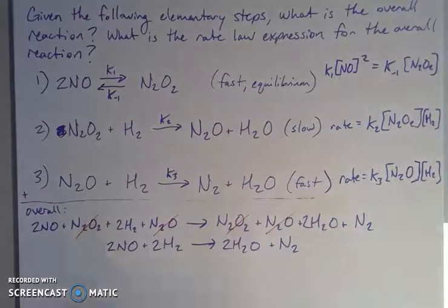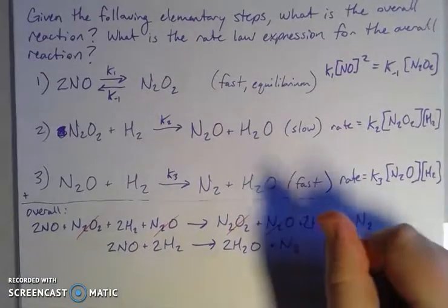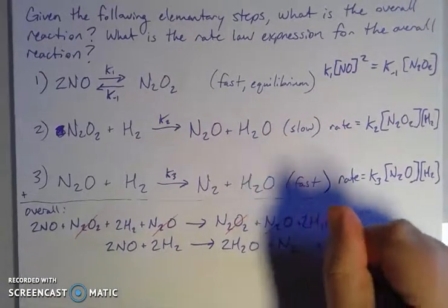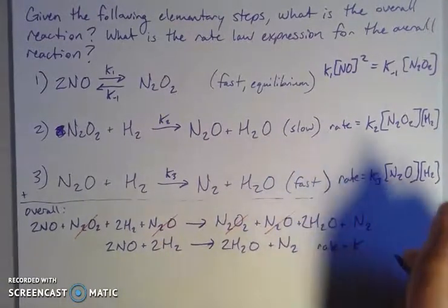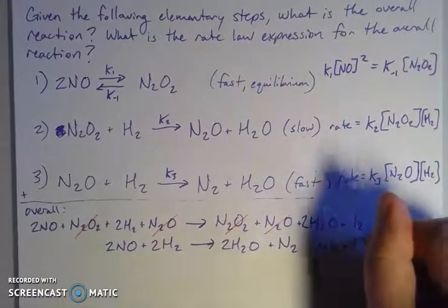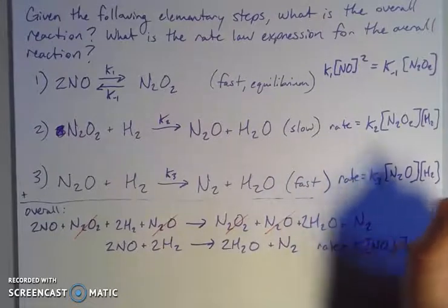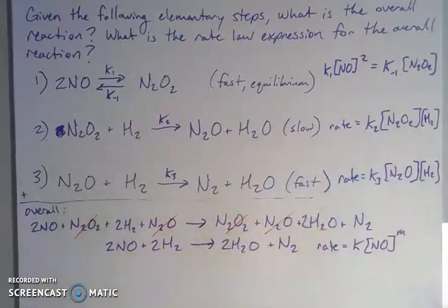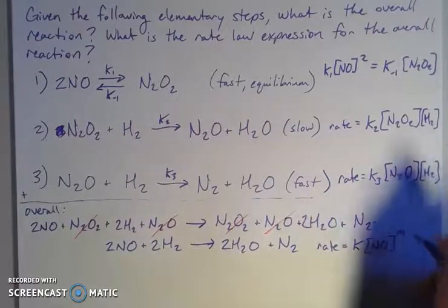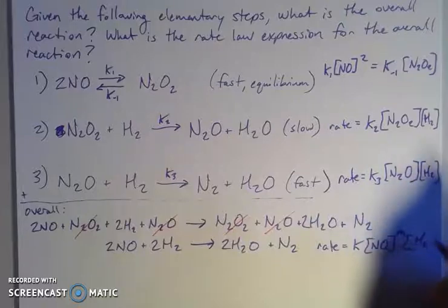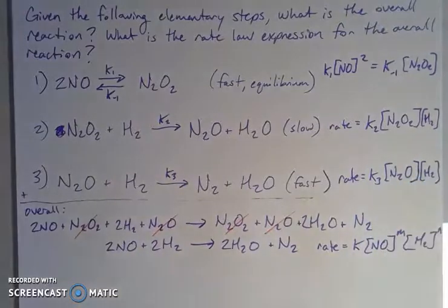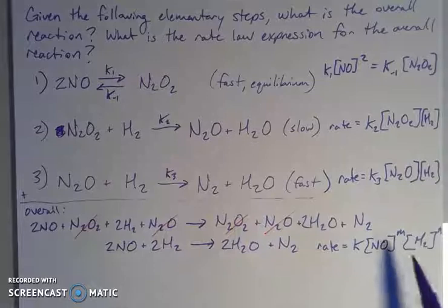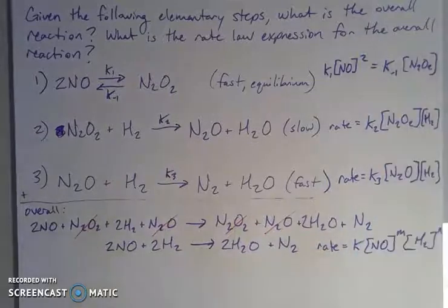So if I'm writing the rate for this process, again it's not an elementary reaction anymore. So I know it's going to be some constant k times the concentration of nitrogen monoxide raised to some power times the concentration of hydrogen raised to some power, and I don't know what those powers are without more information.